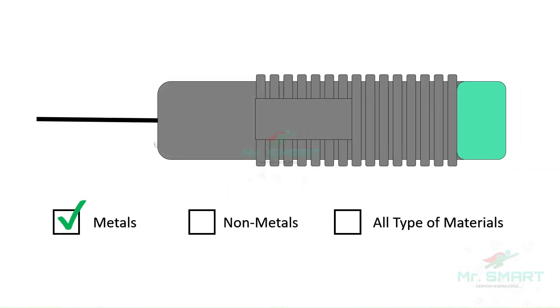As the inductive proximity sensors work based on electromagnetic field, only metal objects can be sensed. And for sensing non-metal or other type of materials, an inductive proximity sensor can't be used.